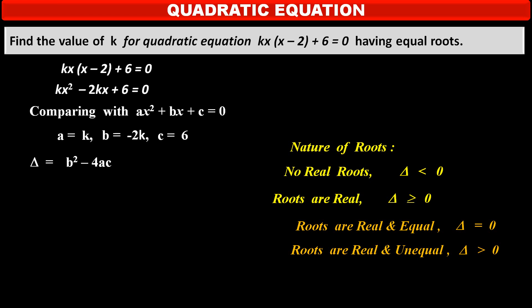Now, we have to find the value of discriminant in this case, to find the value of k by using nature of roots. Substituting the values of a, b, and c in the formula of discriminant, we get b², that is, (-2k)², minus 4 into value of a, k, into value of c, 6.